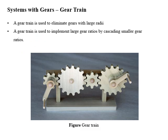Now we will start gear trains. A gear train is used to eliminate gears with large radius, implemented by cascading smaller gear ratios. In this replacement, a large radius disc is replaced with multiple small radius gears, requiring the gear ratio to remain the same. With the help of a gear train we can introduce variation between the speed and torque of the system — like in the example of a bicycle or a car, where changing gears allows us to vary speed and torque as per requirements.